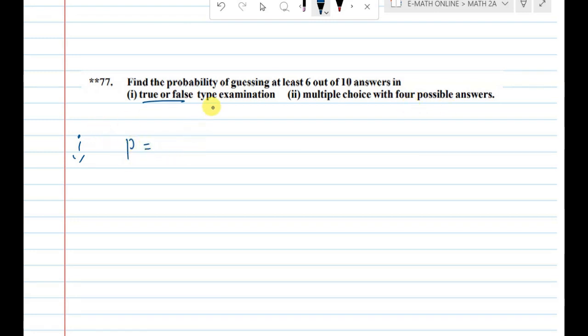So, probability P equal to - in true or false type, the correct answer chance is 1 by 2, wrong answer chance is 1 by 2. Here we have 10 trials, because there are 10 questions.